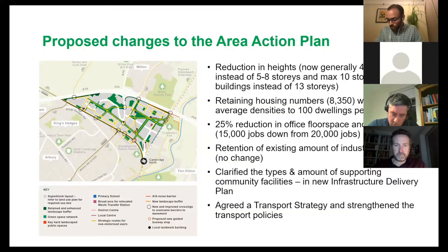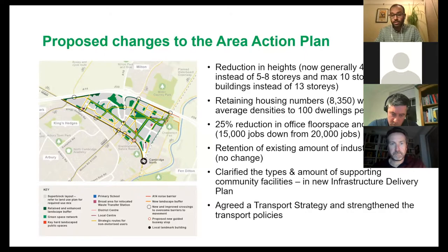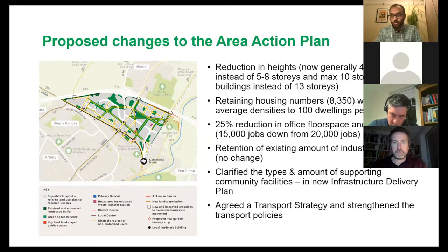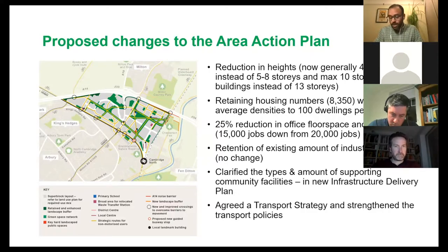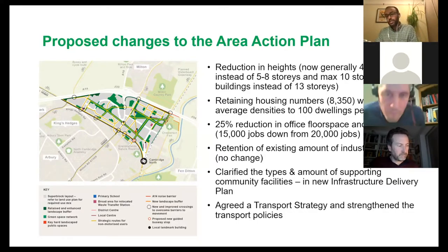In terms of proposed changes based on further evidence, we've reduced building heights — generally now between four and six storeys, with all buildings under 10 storeys — which is similar to more recent developments around Cambridge. We've reduced densities but maintained housing numbers, and there's been a 25% reduction in the amount of office floor space and office jobs coming forward in the area.